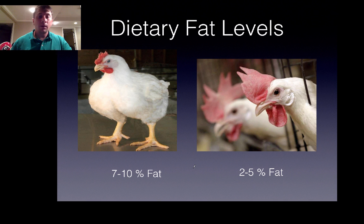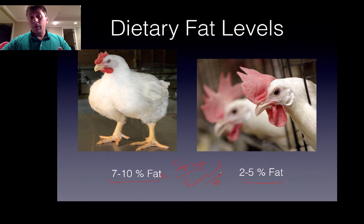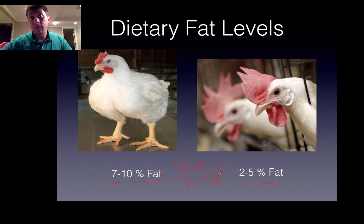Dietary fat levels can range from 7% to 10% in broilers and 2% to 5% in layers. It's easy to manipulate metabolizing energy by using cheap, energy-dense fat. However, fat cannot be stored very long because it risks becoming rancid — it can oxidize, become unpalatable, and even be toxic, pulling out nutrients from the feed.